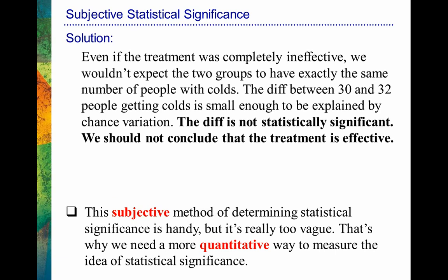Now let's look at that solution we just came up with. This subjective method really leaves us wanting a little bit more. It's handy, but it's very vague. How big did that difference need to be between 30 and 32 for us to determine that we had statistically significant results? That's why we're going to want a more quantitative approach to measuring statistical significance. And that's where the 0.05, 0.01, or 0.001 comes into play. We're going to determine a significance level, and then that probability level will determine if we have enough evidence to say that we have statistically significant results or not.